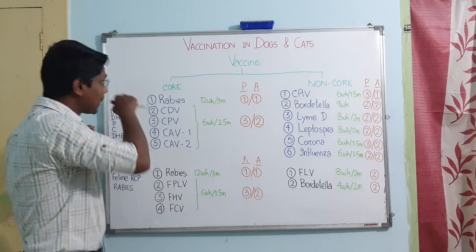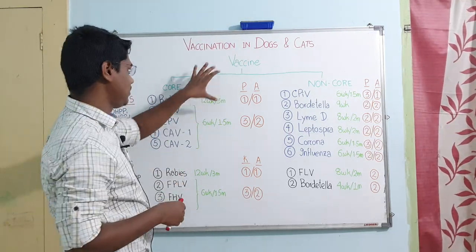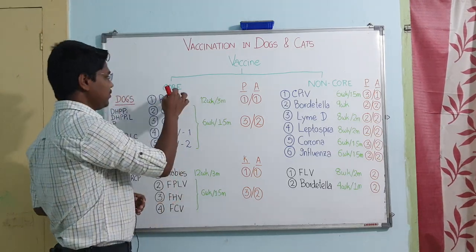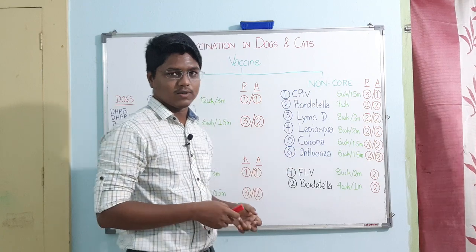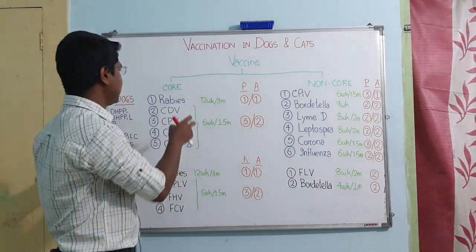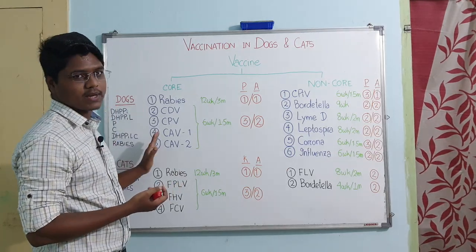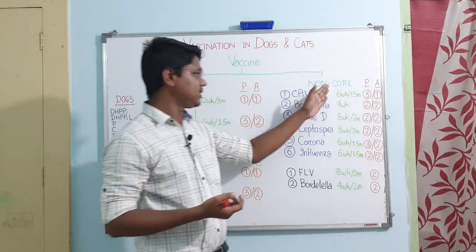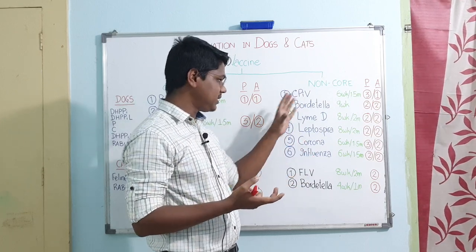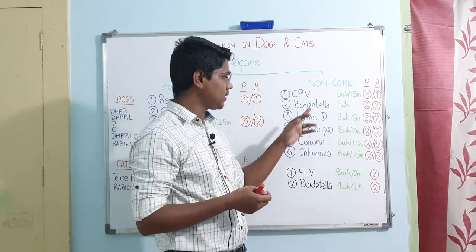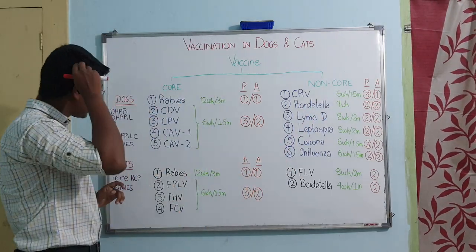Vaccination in dogs and cats: vaccines are basically divided into two types — the core vaccine and the non-core vaccine. Core vaccines are those which you cannot avoid; you have to give them. Non-core vaccines depend on the area where you are residing — if the disease is prevalent in that area, then you give those vaccines.